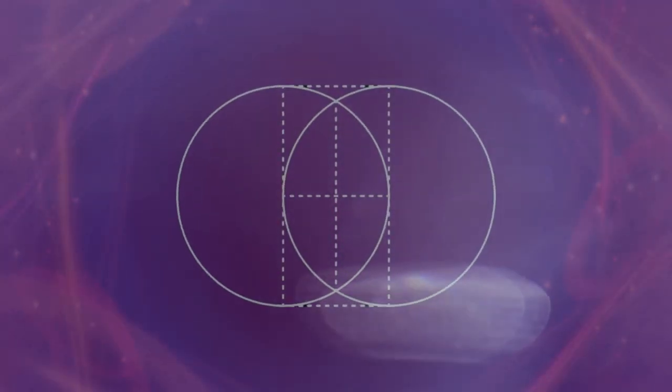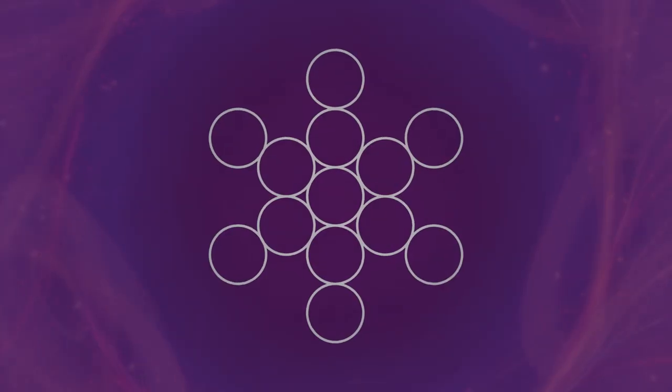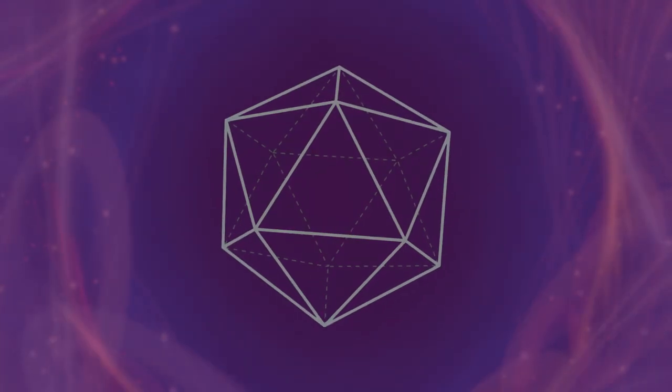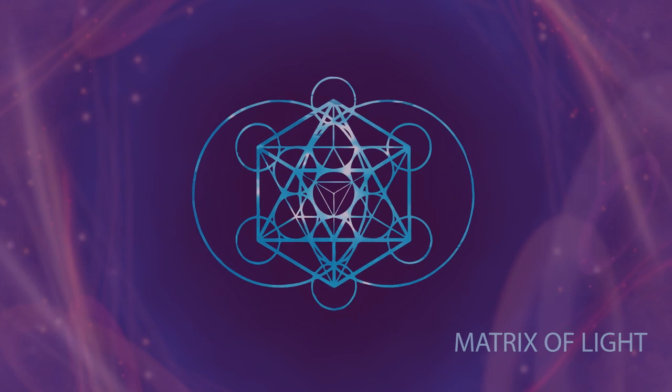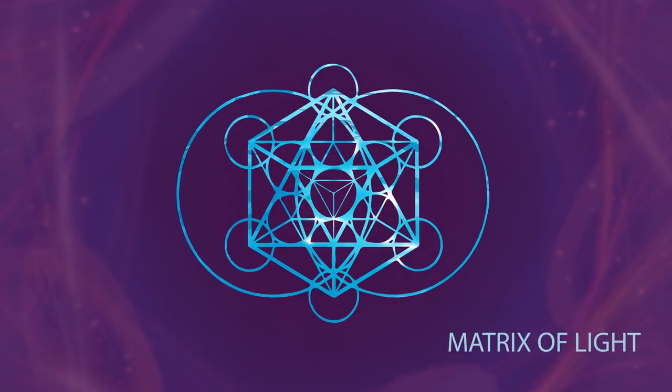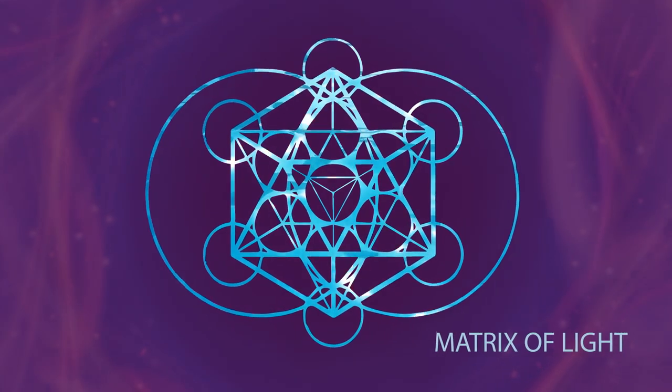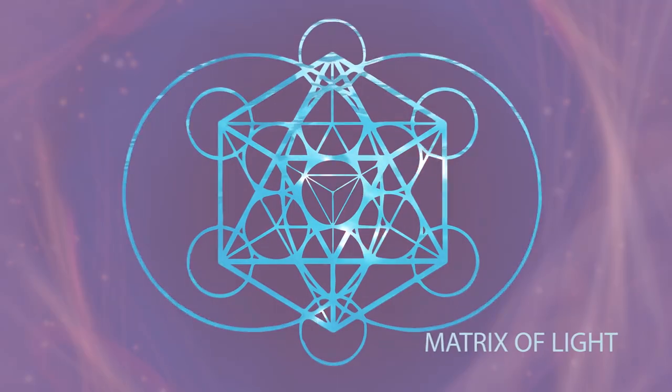The symbols of Vesica Pisces, fruit of life, the Merkaba, and the Icosahedron represent our light body and water body, uniting the mind, body, and spirit, nourishing yourselves with love and light.